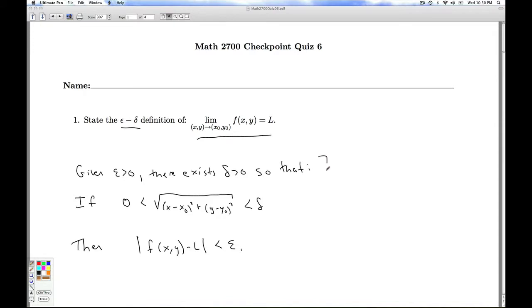Now once again, you can memorize this word for word on a note card or something, or you can remember this is the same concept of limit we had in Calc 1. In order to claim that the limit of the function is equal to l, we have to guarantee that we can get the function values as close as we need to to l by getting the point x y close enough to the point x naught y naught.